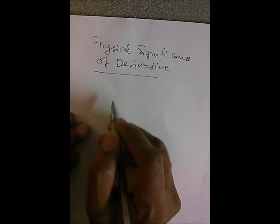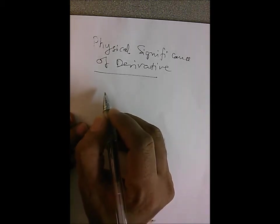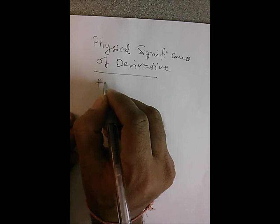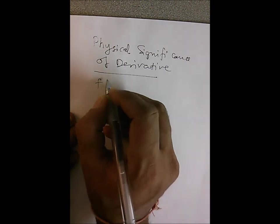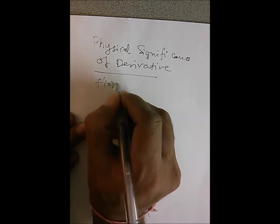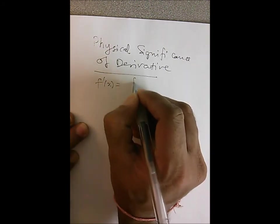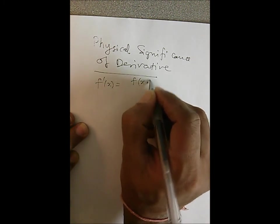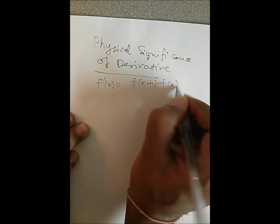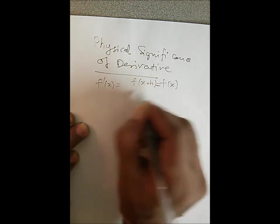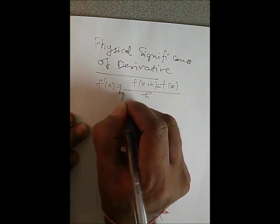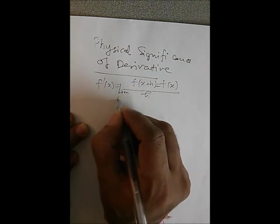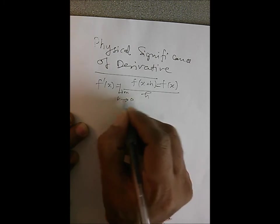What's the physical significance of a derivative? A derivative of a function f(x) is defined as f'(x) equal to the limit as h approaches zero of f(x+h) minus f(x), divided by h.